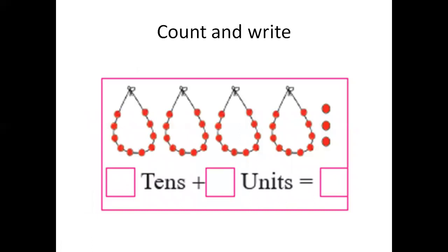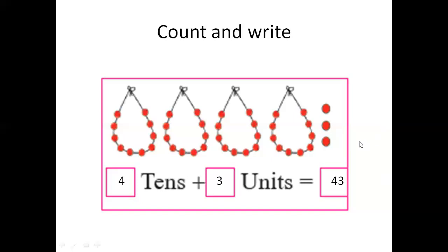Now count these beads. We have to count all the beads here. So here are 4 strings of beads, and each string carries 10 beads. So there are 1, 2, 3, and 4 strings — it means 4 groups of tens, that is 4 tens. And 1, 2, 3 — 3 single beads, that is 3 units. So we will write this as 4 tens plus 3 units: 40 plus 3 is equal to 43. So there are 43 total beads.